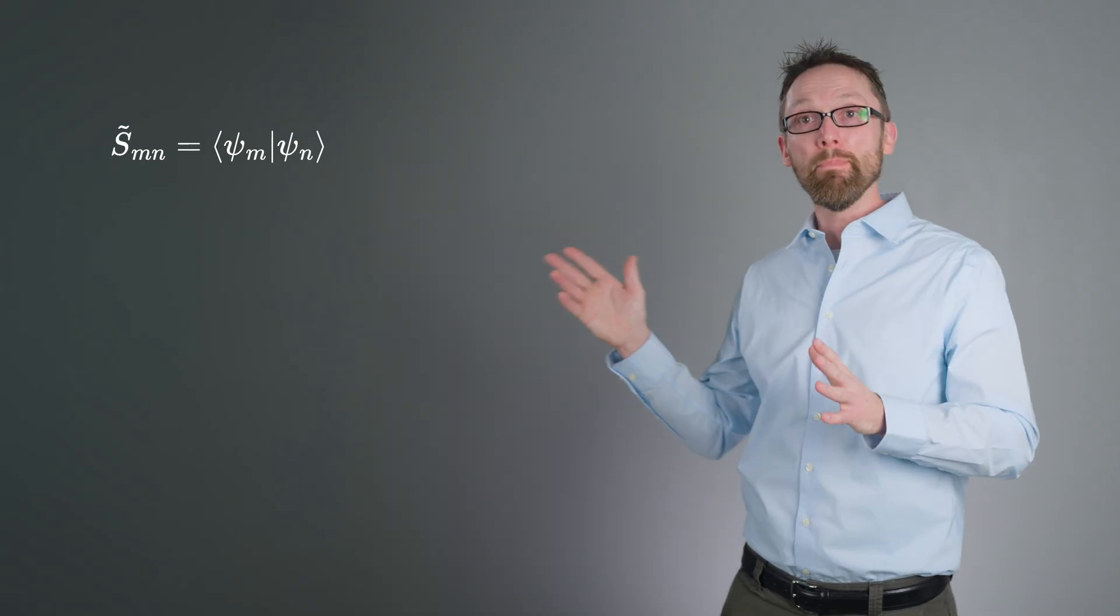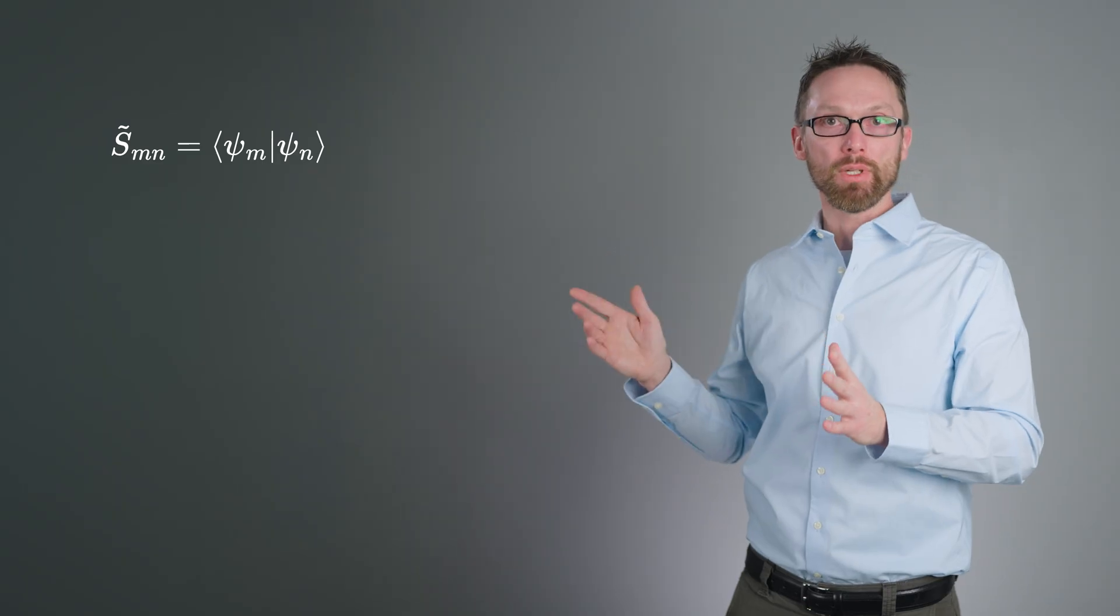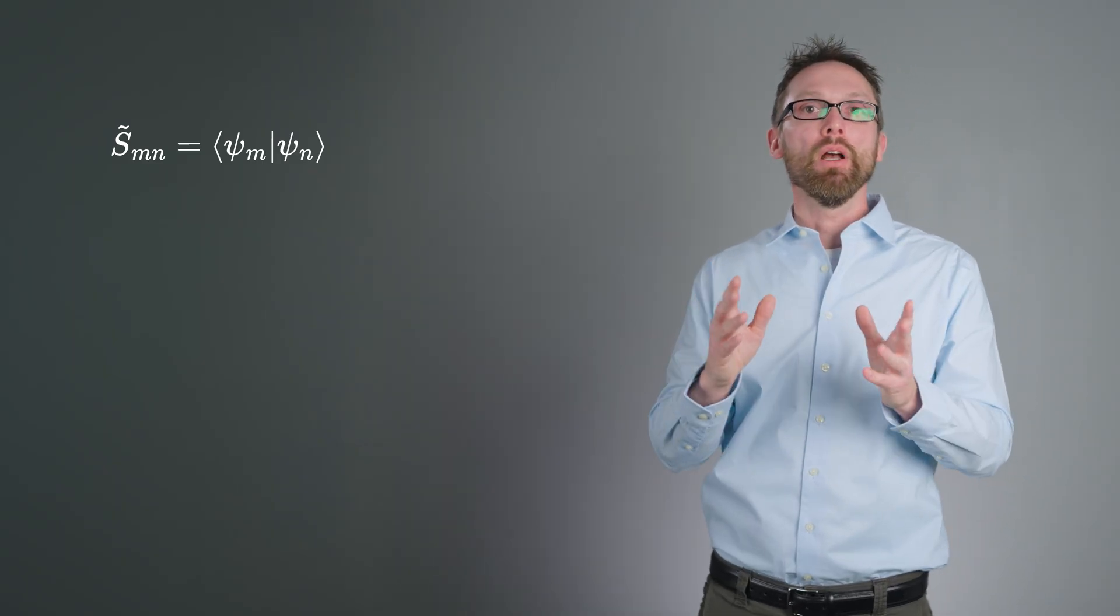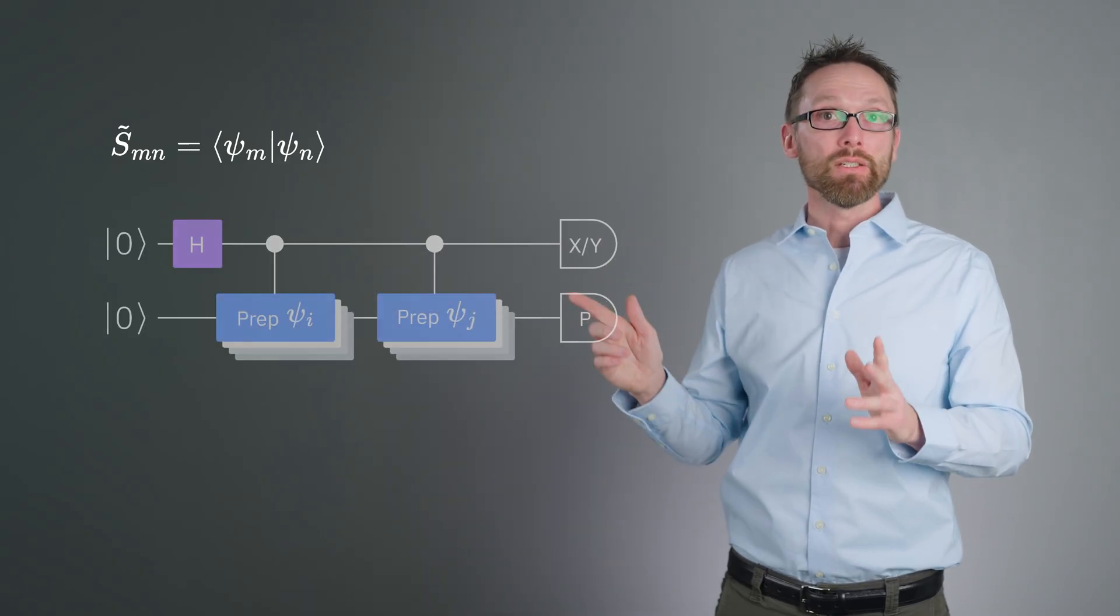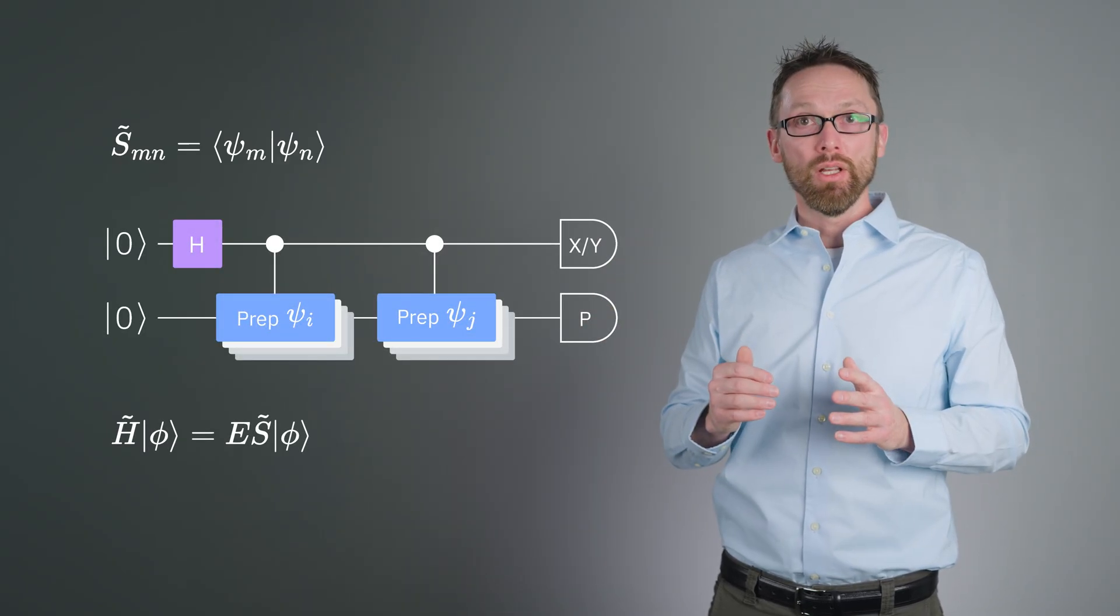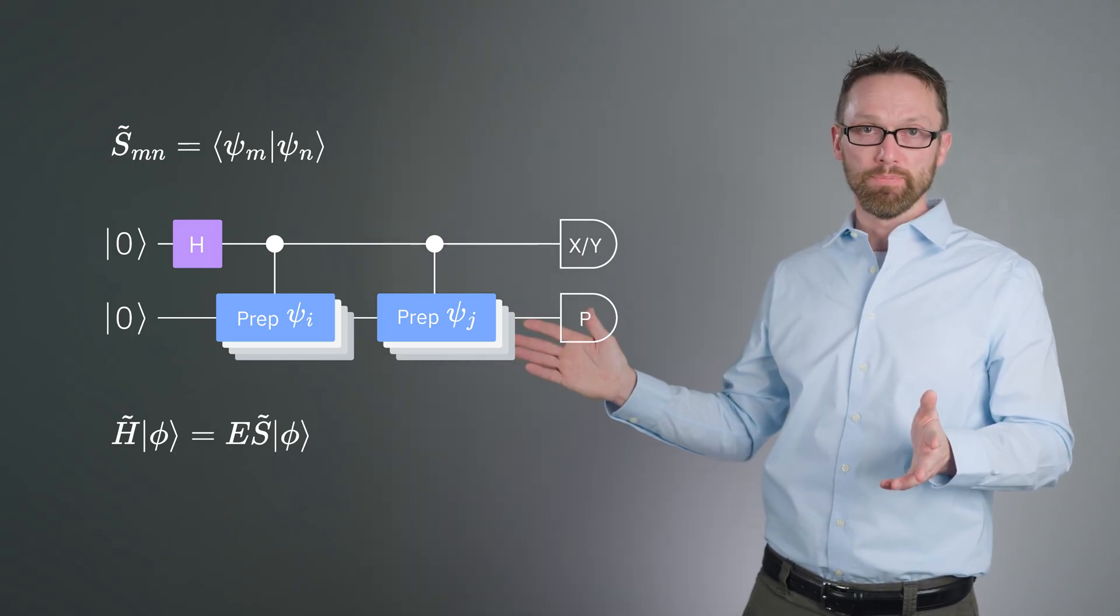Hence, we solve a generalized eigenvalue problem using the Gram matrix S. The mn element of the Gram matrix is given by the inner product of psi m on psi n. Both the elements of h tilde and S are calculated using a Hadamard test. The generalized eigenvalue problem then becomes this. As noted above, the dimension of the unitary Krylov subspace r is exponentially smaller than our initial matrix dimension n. So this eigenvalue problem is simple to solve classically.